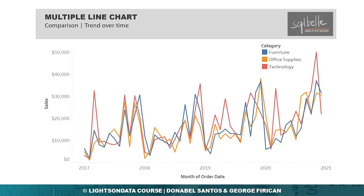Going back to our regular line graph, we can choose to add multiple lines in the same graph to represent different values or series. What we are seeing in this example is a chronological time axis from 2017 to 2021, and each line represents sales for a category.